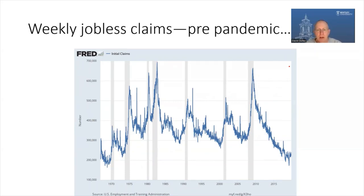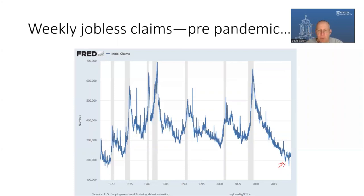You can see in this chart jobless claims pre-pandemic from the late 1960s until just before the pandemic. They increased during recessions — the gray bars — and declined during expansions. Just before the pandemic, weekly jobless claims were hanging around just over 200,000 per week for the most part, which hadn't been that low since the 1960s.